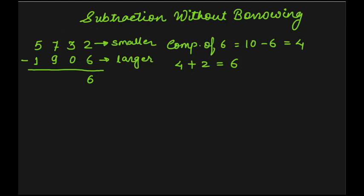We make a carry over by putting a dot before the next digit, which is 0. So we make a carry over 0 as dotted 0. Dotted 0 means 0 plus 1, which equals 1. So the value of dotted 0 is 1.